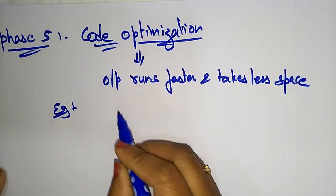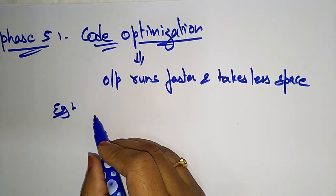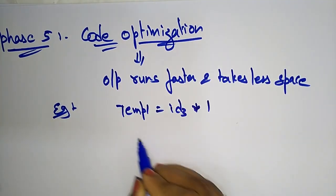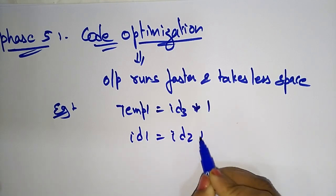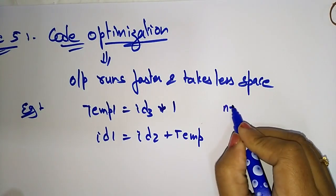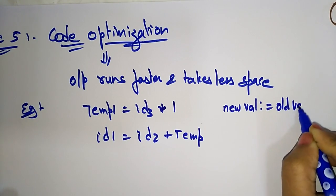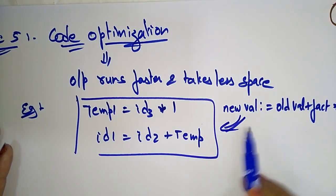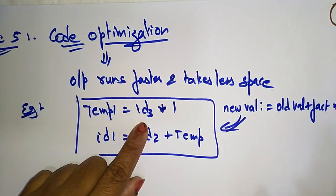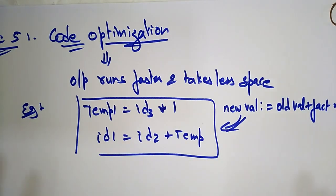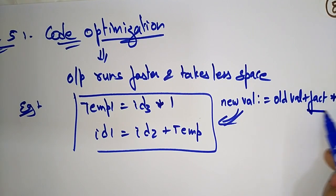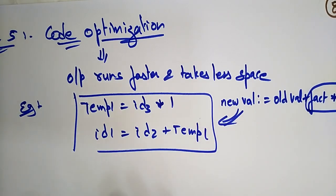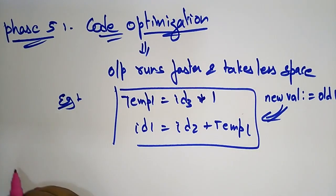Taking the above intermediate code as an example: temp1 = ID3 * 1 is converted to just ID1 = ID2 + temp1, meaning the full equation new_value = old_value + fact * 1 is simplified by avoiding unnecessary statements. fact * 1 is taken as temp1, old_value is ID2, and new_value is ID1. This is code optimization.